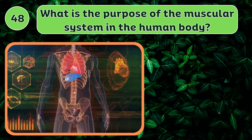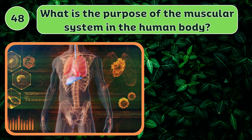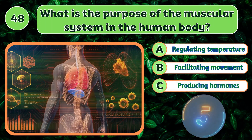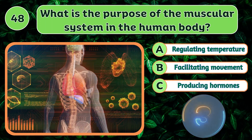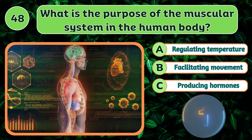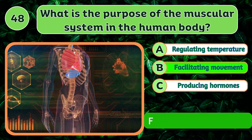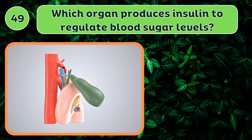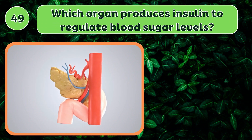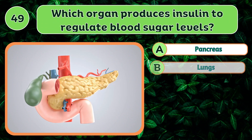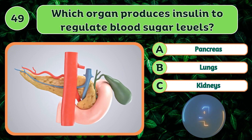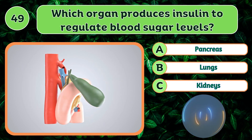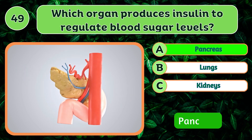What is the purpose of the muscular system in the human body? Facilitating movement. Which organ produces insulin to regulate blood sugar levels? Pancreas.